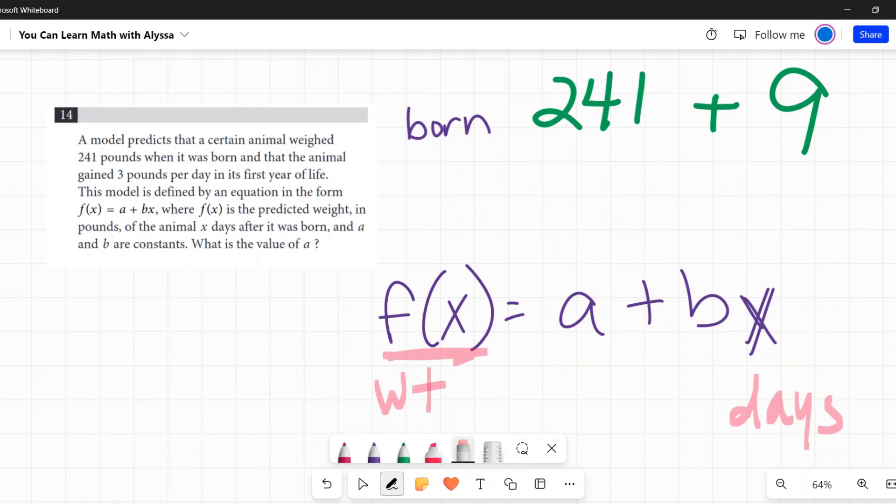There we go. So that a is going to be that starting weight of 241, and that b is how many pounds per day that animal is gaining, three times however many days it's been. So 241 plus 3x. And they're saying what is the value of a? That was the starting weight, is what was going in for a. So 241 is my answer.